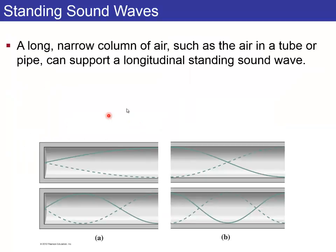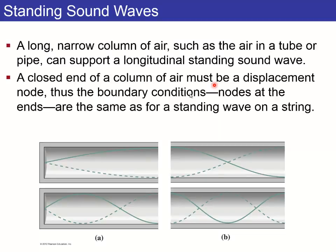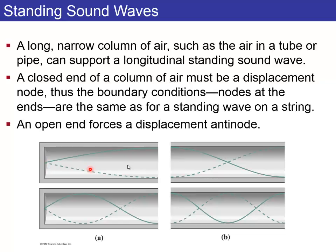Standing sound waves are formed from a narrow, long narrow column of air. A closed end will create a displacement node. So that's a boundary condition. Just like the waves on the string, the node in the displacements must be at the closed ends of these tubes. And it turns out that an open end will force a displacement antinode. It's a pressure node, but that's where the particles are oscillating back and forth with their maximum value.